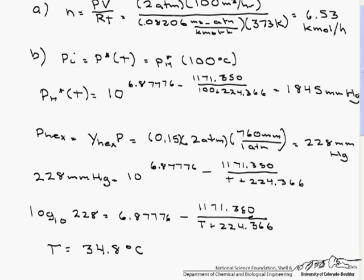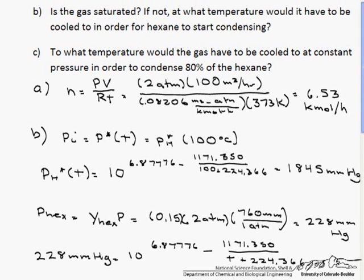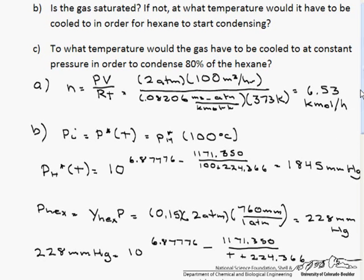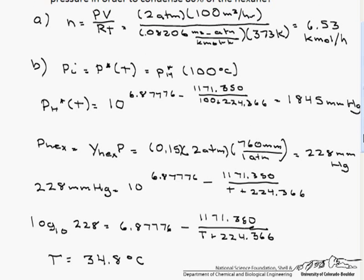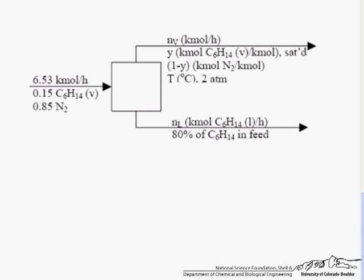In other words, that is the temperature that it would have to be cooled to in order for the hexane to start condensing. The next thing that we are asked is to what temperature would the gas have to be cooled to at constant pressure in order to condense 80% of the hexane. So what we have to do here is do a picture.